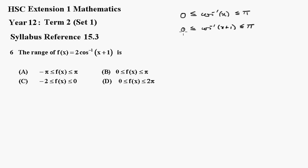So I'll multiply this out by 2, I get 0, 2 inverse cos of x plus 1, less than 2 pi.